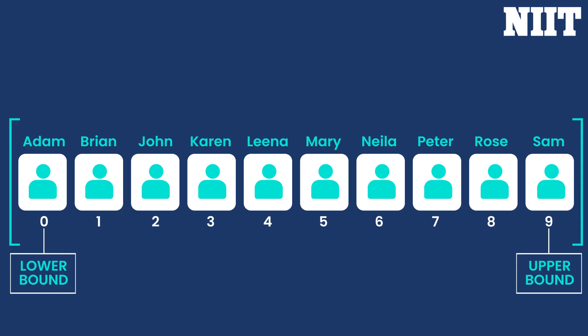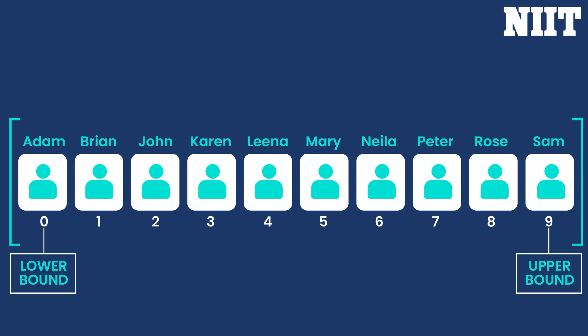To implement binary search, divide the list into two equal halves by obtaining the index of the middle element. You need to divide the sum of the lower bound and upper bound by 2. Since the index of the middle element comes out to be 4, the middle element is LENA. Now there can be three possible conditions.